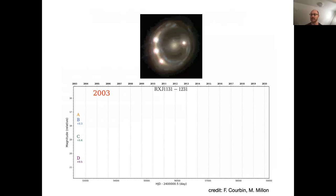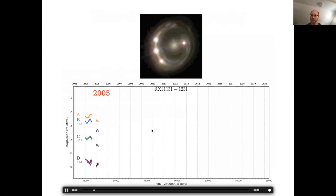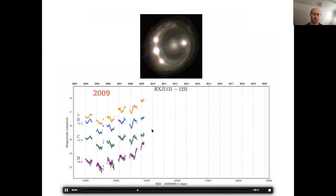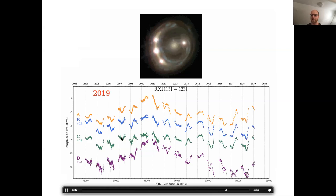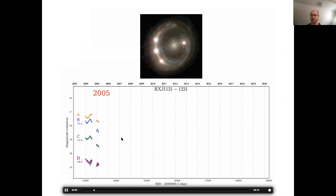Here in this next animation, this is one of the famous lenses, RXJ 1131, where the Cosmograil team has light curves over more than a decade. You can see the beautiful light curves and how they match relative to each other to produce a time delay measurement.